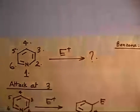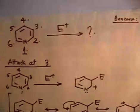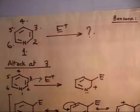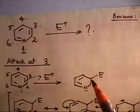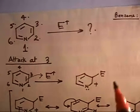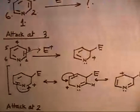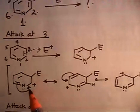Let me discuss the solution. Let us first take attack at carbon number 3. If I attack on carbon number 3, this lone pair flows — this goes here, this goes here — so the electrophile attaches here and a positive charge appears here. Now I can write the resonating structures for this molecule. First step: this double bond goes here.